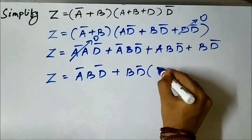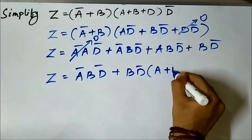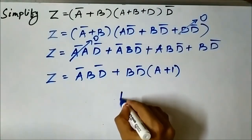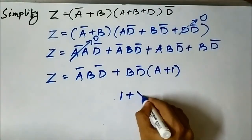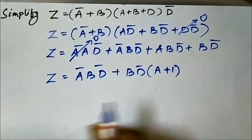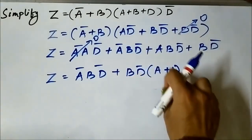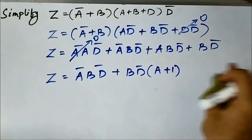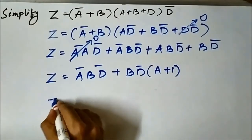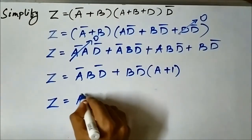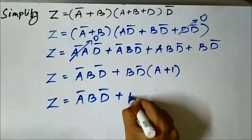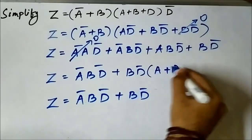Taking b·d̄ common from a·b·d̄ and b·d̄ gives b·d̄·(a + 1). By the Boolean algebra rule, any variable OR'd with 1 gives 1, so a + 1 = 1. Therefore b·d̄·(a + 1) = b·d̄·1 = b·d̄. So z = ā·b·d̄ + b·d̄.